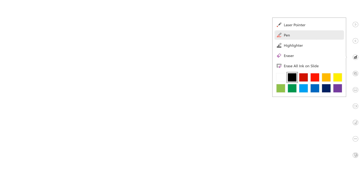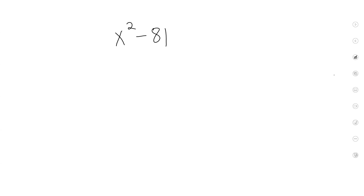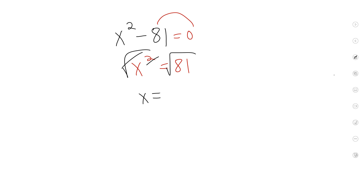Here are some of the easier quiz questions — something like this. You just had to move this over so that it's x² = 81. Then you do the square root of both sides. What's the square root of 81? 9 — also negative 9. You can write it as x = 9 and x = −9, or you can write it as plus or minus — same thing.